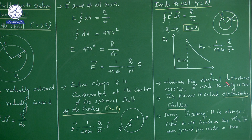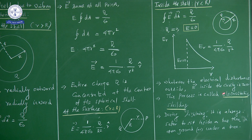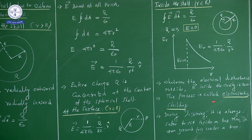In the process of electrostatic shielding, whatever the electrical disturbance outside, the electric field inside the cavity is zero. During lightning, it is always safer to sit inside a bus or car than in an open area under a tree. The reason is electrostatic shielding.